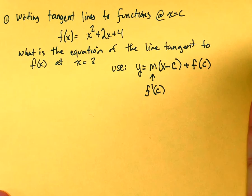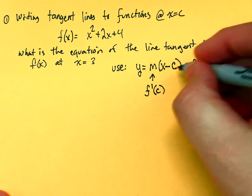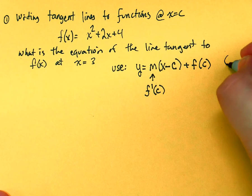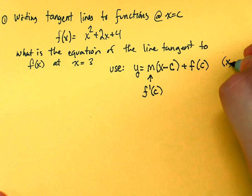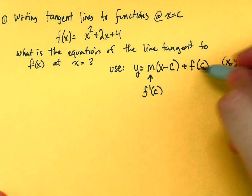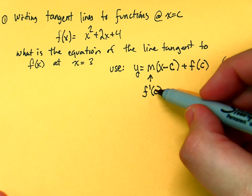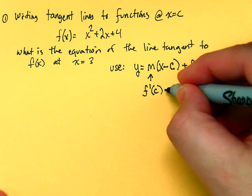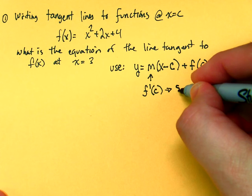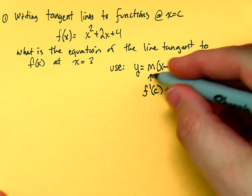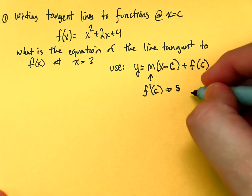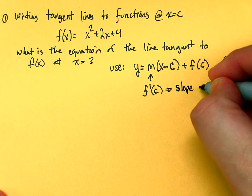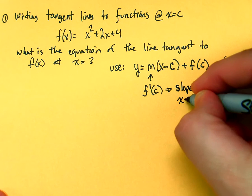I just moved the y sub 1 over to the side. So, if we have the point x sub 1 comma y sub 1 and say this is really c comma f of c, that's where we get our points from. Now, f prime of c, what does that actually give us? What's the m stand for? Slope. So, this is slope at x equals c.